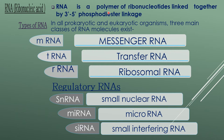First, I'm going to explain about RNA and its different types. RNA is a polymer of ribonucleotides linked together by 3' to 5' phosphodiester linkage. In all prokaryotic and eukaryotic organisms, three main classes of RNA molecules exist: mRNA (messenger RNA), tRNA (transfer RNA), and rRNA (ribosomal RNA). Apart from these three main types, there are regulatory RNAs such as small nuclear RNA (snRNA) and microRNA (miRNA).